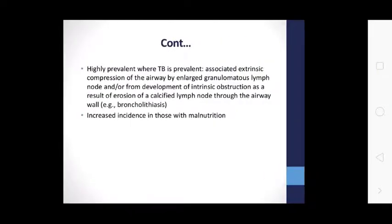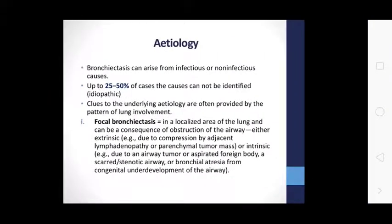Highly prevalent TB is associated with compression in the airway from enlarged granulomatous lymph nodes and other developments, including erosions and calcified lymph nodes toward the airway wall. Bronchiectasis incidence is also increased in those with malnutrition. The epidemiology can arise from infectious and non-infectious causes; in up to 25 to 50 percent of cases, the cause cannot be identified — termed idiopathic.